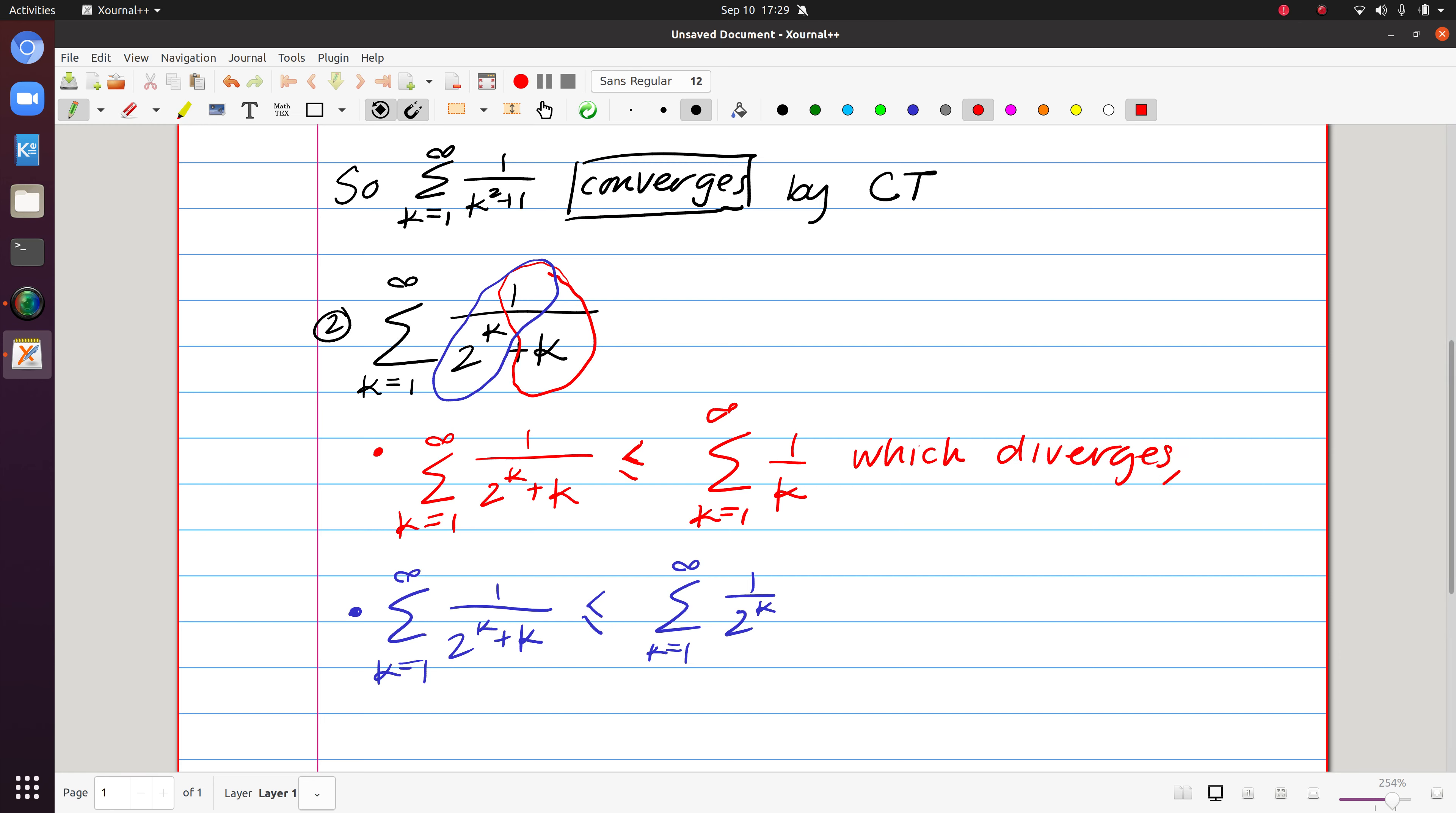And again, our justification is that it's a p-series where p is 1. And we know that a p-series diverges for p-values that are less than or equal to 1.